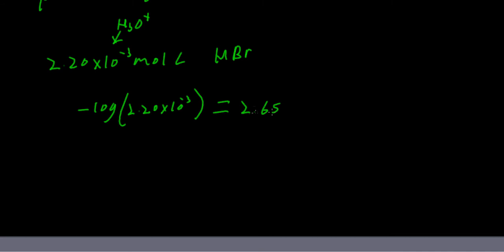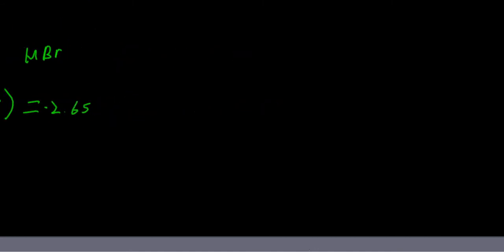Let's do another similar example. 2.20 times 10 to the negative 3 moles per liter of HB, once again a strong acid. Same thing, we're given the H3O+, so we just go negative log 2.20 times 10 to the negative 3, and that equals 2.65. So we've got a pH of 2.65. Just to reiterate my point, that negative, if you were to take it away, the answer would simply be negative 2.65, so it's just to produce a positive number. Not too hard, right? Easy enough.